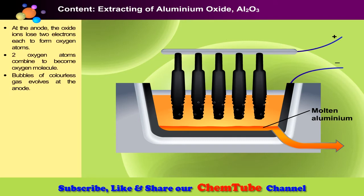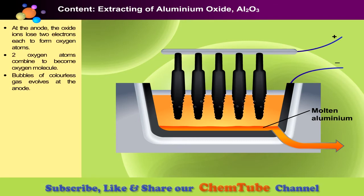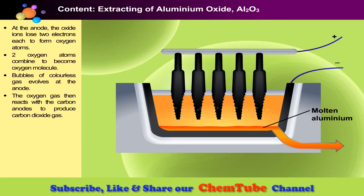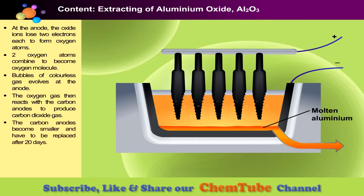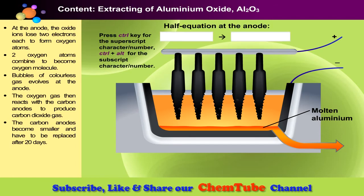At the anode, oxide ions are attracted to the anode and lose two electrons each to form oxygen molecules. The oxygen gas then reacts with the carbon anode to produce carbon dioxide gas. The carbon anodes become smaller and have to be replaced after about 20 days.